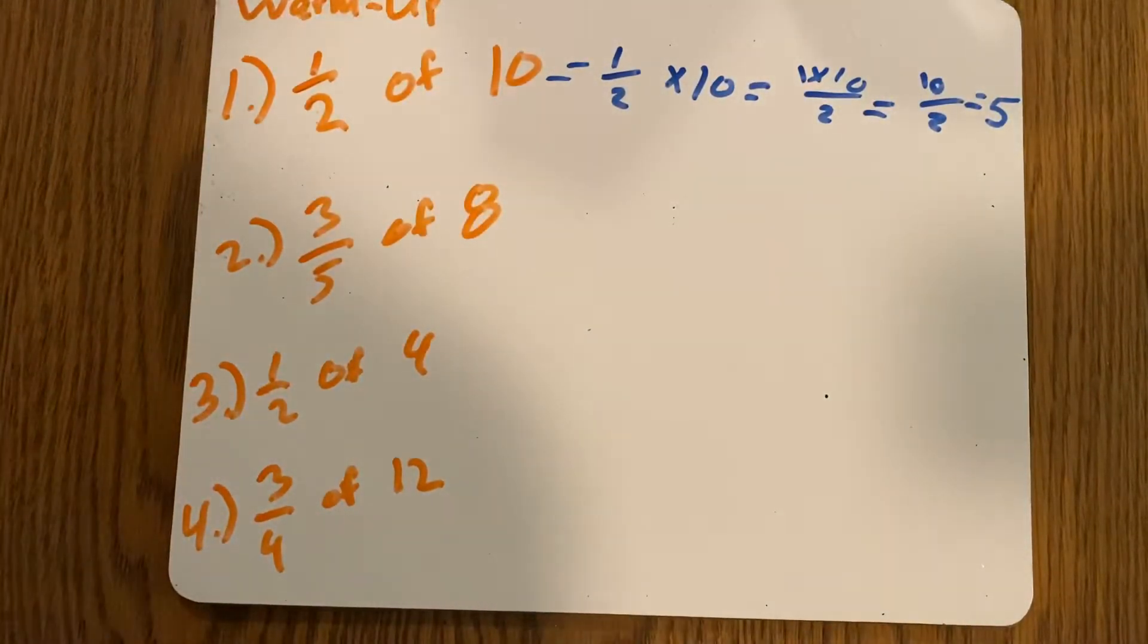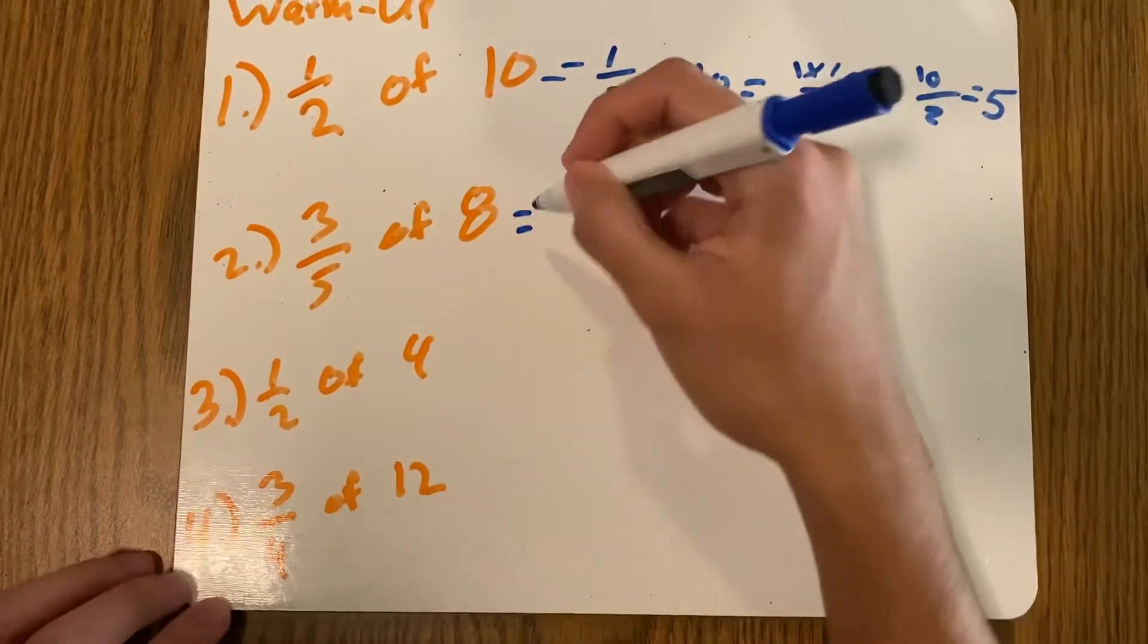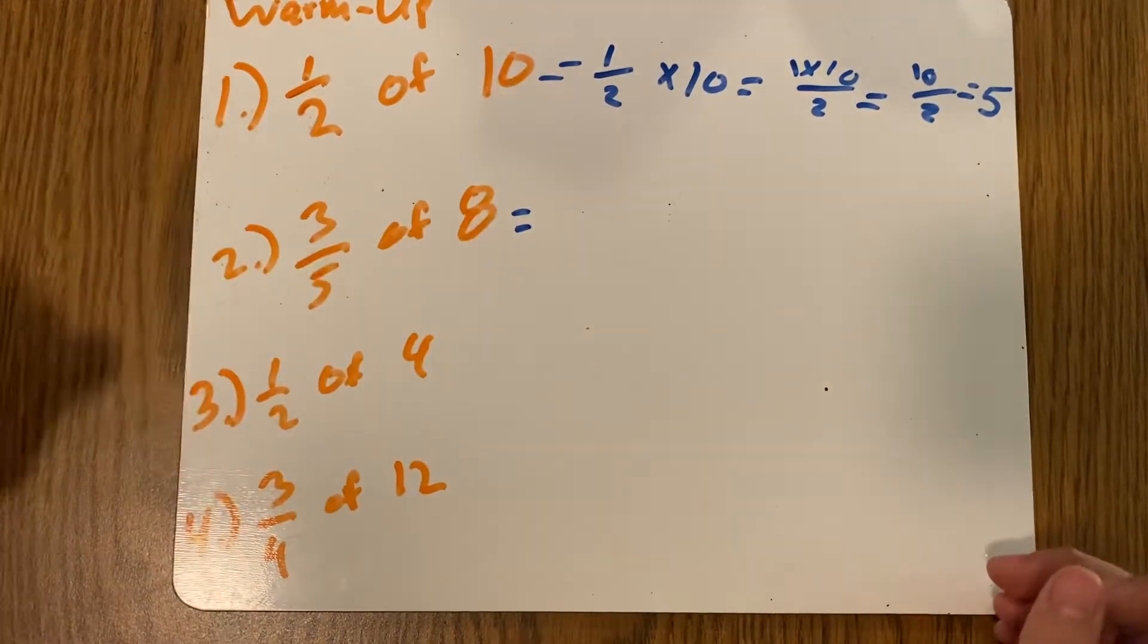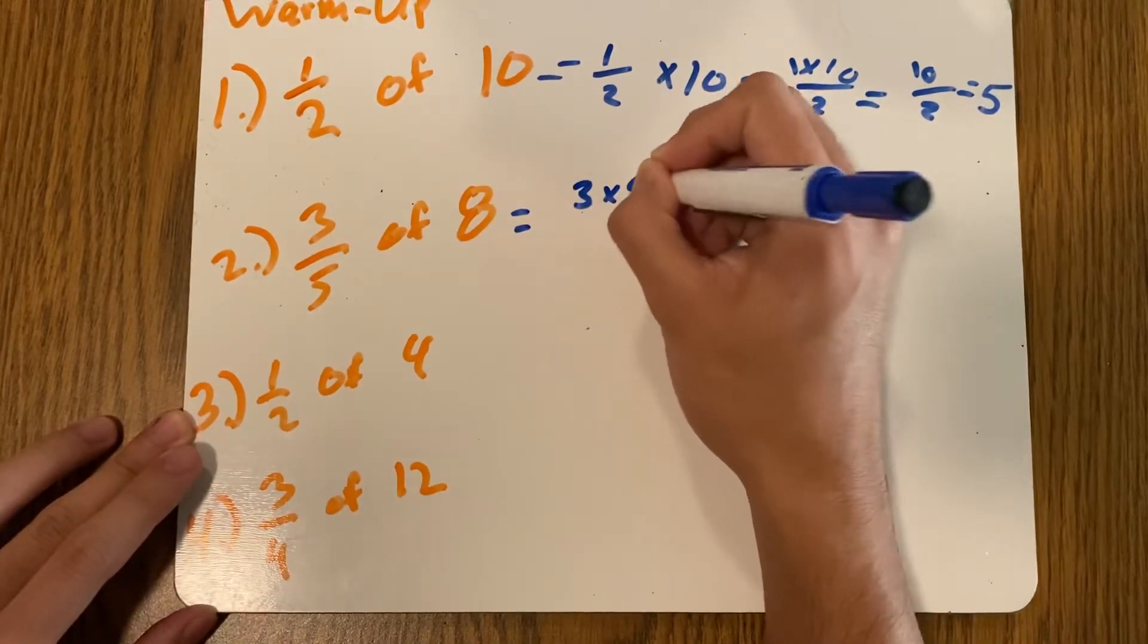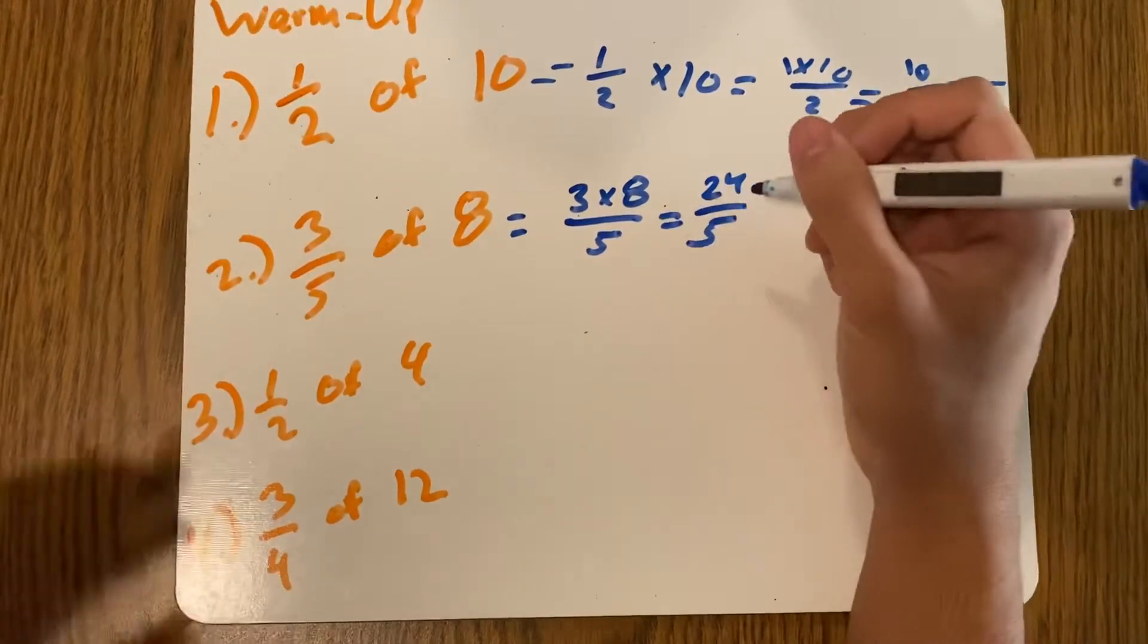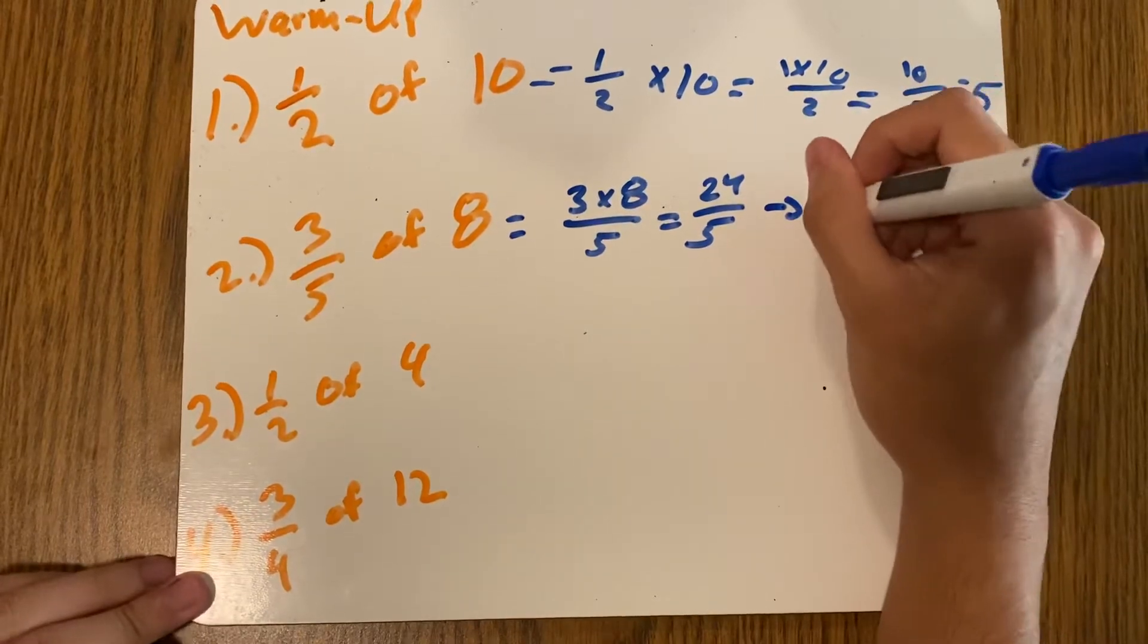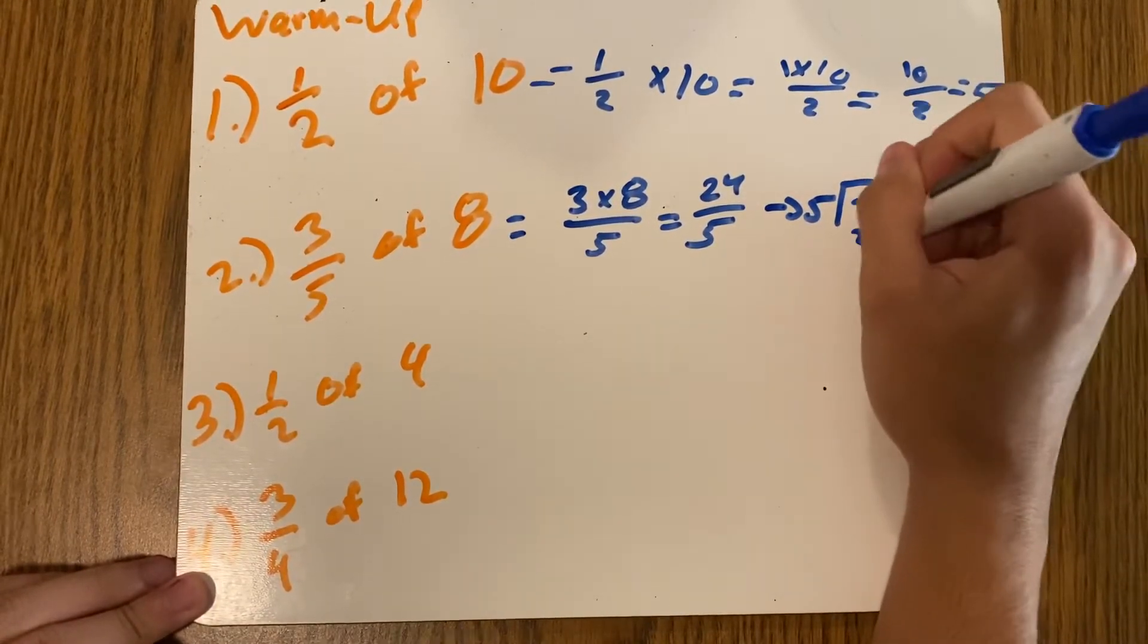Next one, same thing. What's three fifths of eight? If you have eight pieces and your friend grabbed three fifths of it, how much is that? Well, three times eight times five. Three times eight, that's 24 over 5. And then you could switch it up as a mixed number. Five goes into 24 four times. My answer is four wholes and four fifths.